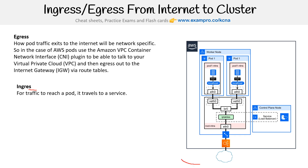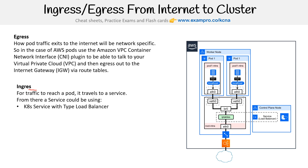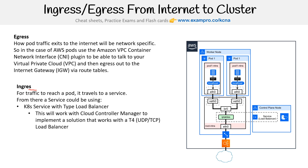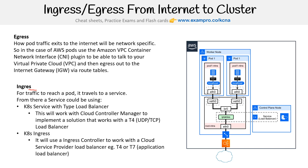Ingress is for traffic to reach a pod — it's going inward. The traffic has to travel to a service. From a service, it could be using a Kubernetes service with type LoadBalancer, which works with the cloud controller manager to implement a solution for L4 load balancing — something that does UDP and TCP. The other option is Kubernetes ingress, which uses an ingress controller to work with a cloud service provider load balancer. That's specifically for L7, so I would say it's just L7.